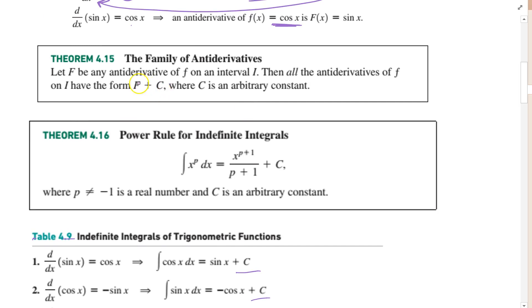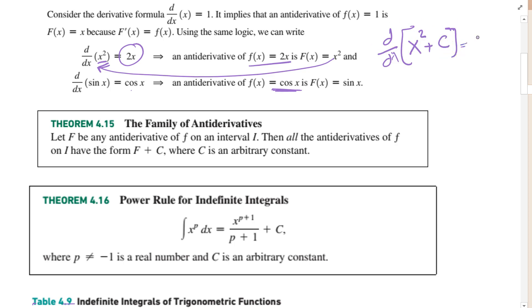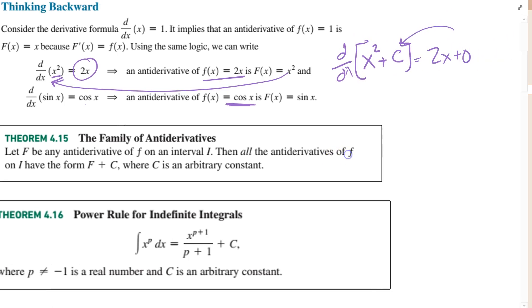One step further: we want a family of antiderivatives. If I take the derivative of x squared plus c with respect to x, I get 2x plus 0, because the derivative of a constant is 0. So any function of the form x squared plus c, where c is a constant, is an antiderivative, meaning 2x is the derivative of the entire family x squared plus c.